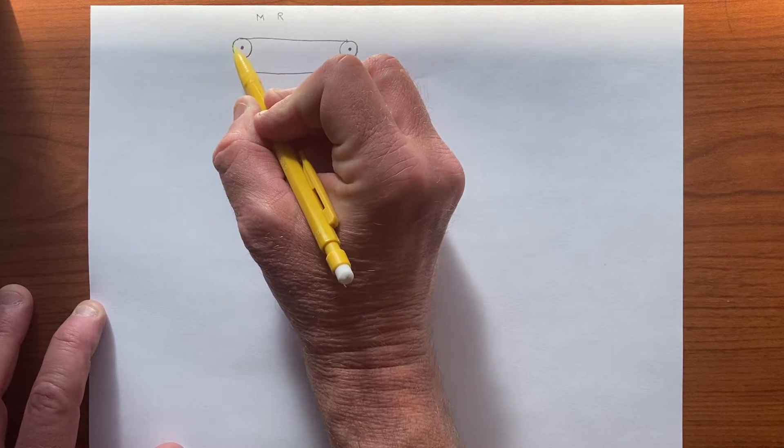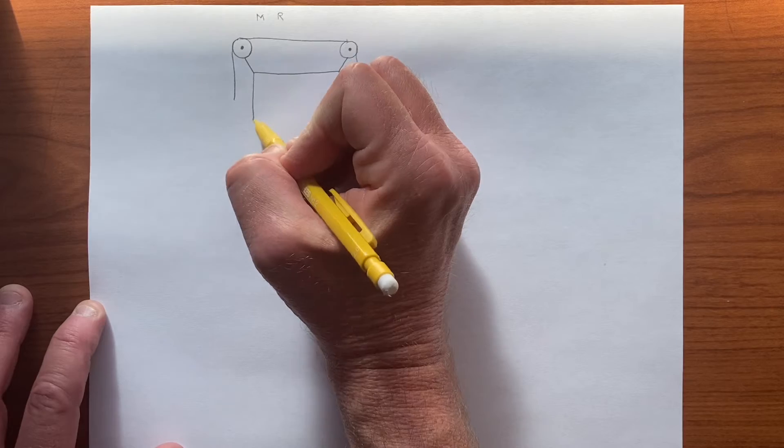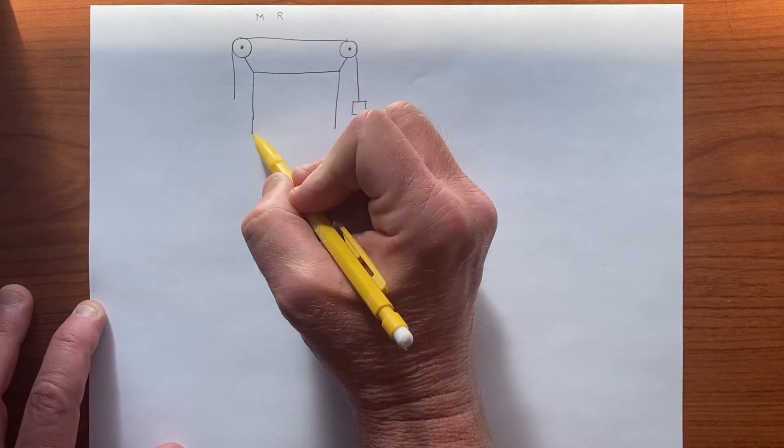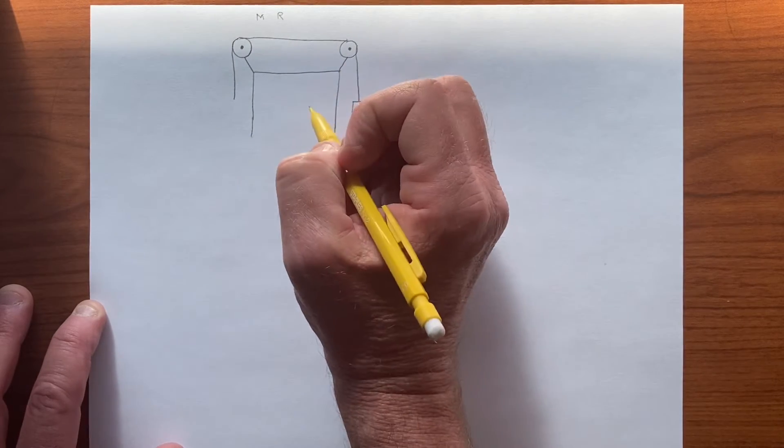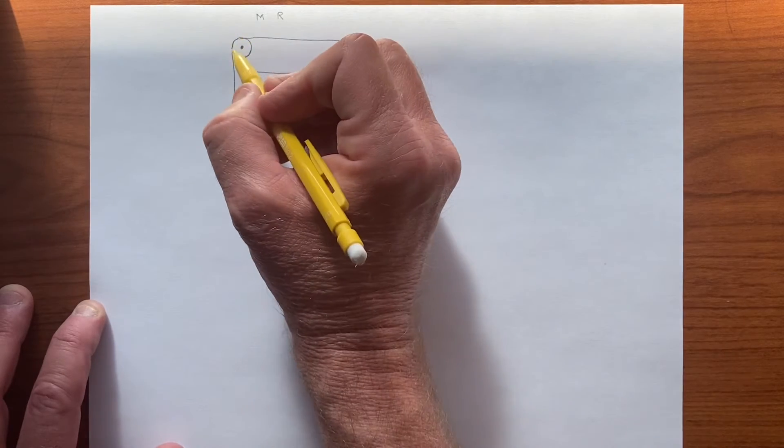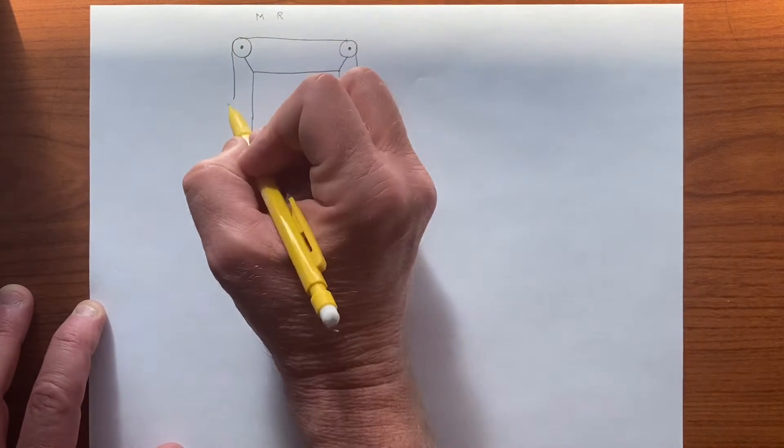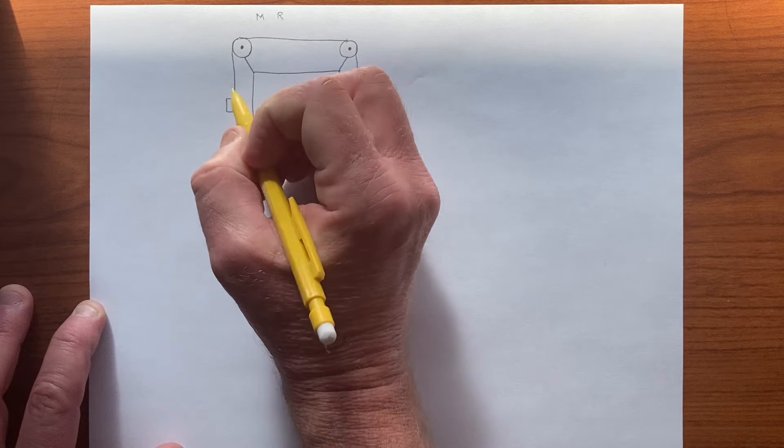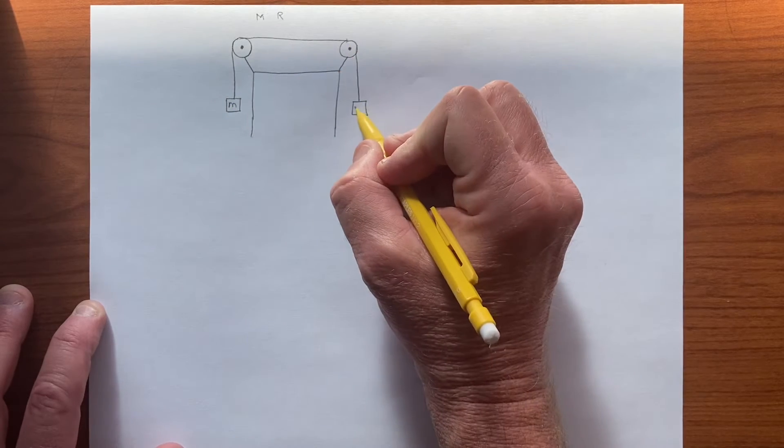So the string cannot slide, so think of this as a table, and we have these two pulleys, but the string cannot slide because there's friction, and we have two objects of mass m and, say, 2m.